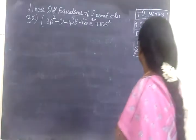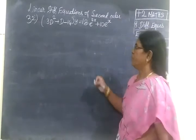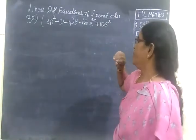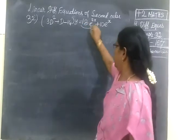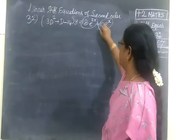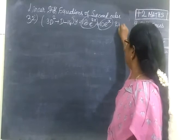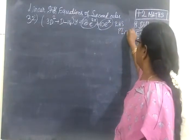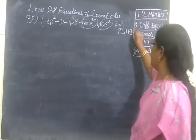Now we see Example 32 for page 157. The equation is 3d² plus d minus 14 of y equal to 3e^(2s) plus 10e^s. You have to find PI1 plus PI2.